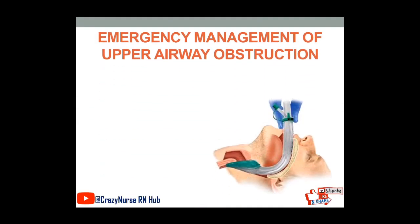For emergency management of upper airway obstruction, upper airway obstruction has a variety of causes. Acute upper airway obstruction may be caused by food particles, vomitus, blood clots, or anything that obstructs the larynx or trachea. It also may occur from the enlargement of tissue in the wall of the airway, as in epiglottitis, obstructive sleep apnea, laryngeal edema, laryngeal carcinoma, or peritonsillar abscess, or from thick secretions.